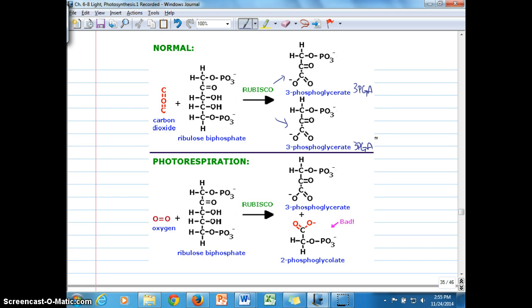Whereas when we're looking at photorespiration here, we can see, again, ribulose bisphosphate is the acceptor. RUBISCO is the enzyme, just like in carboxylation step there. But in this case,